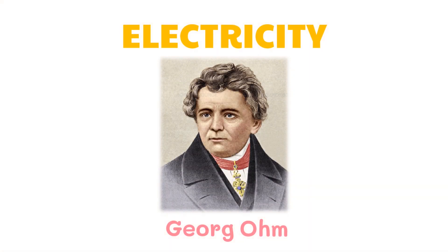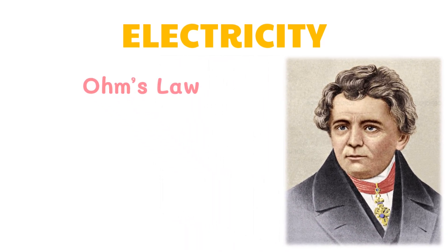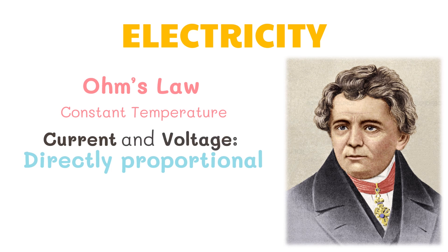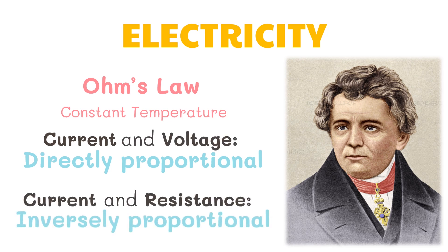The relationship between voltage, current, and resistance in any DC electrical circuit was first discovered by George Ohm. George Ohm found that, at a constant temperature, the electrical current flowing through a fixed linear resistance is directly proportional to the voltage applied across it and also inversely proportional to the resistance. This forms the basis of Ohm's law.